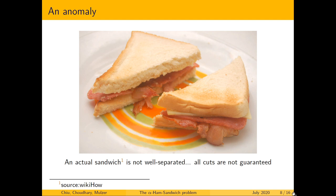In real life, a ham sandwich is not well separated — the two slices and the layer of ham between them are not well separated, even though they may follow some kind of general position. So although we can bisect it, we can never divide it into any arbitrary ratio.